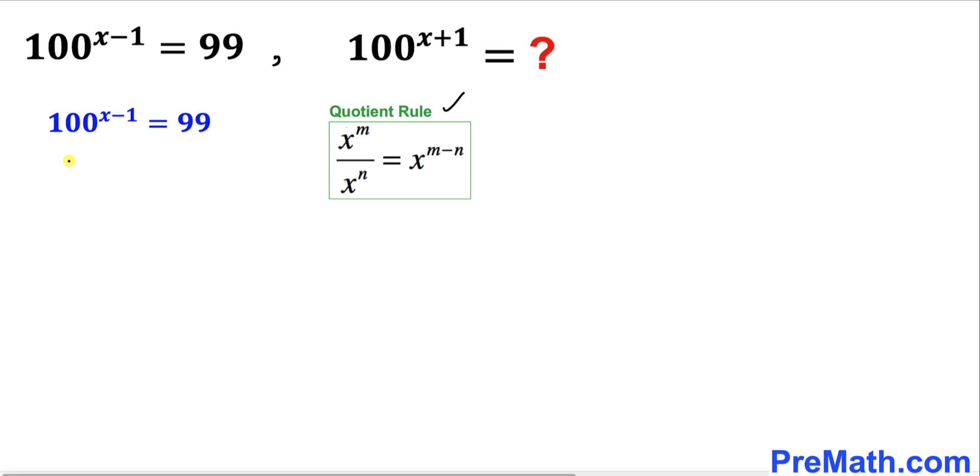So this could be written as 100 power x divided by 100 power 1 equals 99 on the right hand side. And now we know that 100 power 1 is the same as 100.